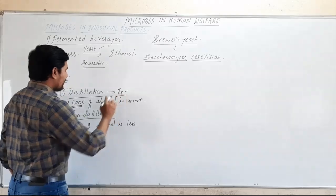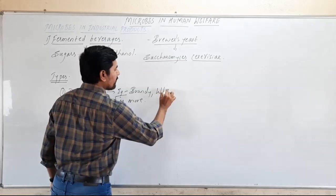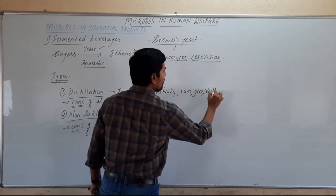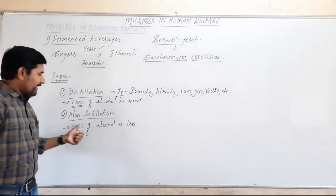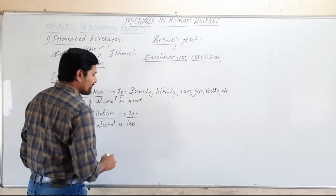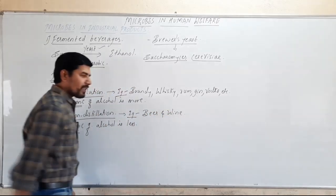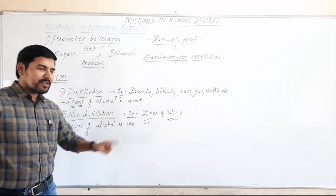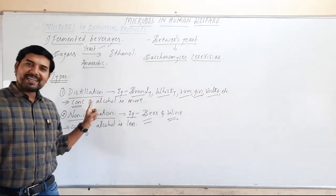Examples of distilled alcoholic products include brandy, whiskey, rum, gin, vodka, and other alcoholic brands. For non-distillation products, the examples are beer and wine. Beer and wine are non-distilled alcoholic products, while brandy, whiskey, rum, gin, and vodka are all distilled. Generally, the percentage of alcohol is less in beer and wine, and very high in the distilled brands.